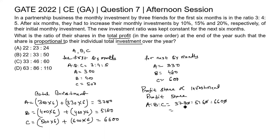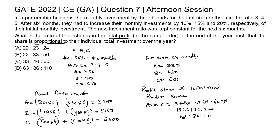Cancelling the common zeros, we get 378 : 516 : 660. Dividing by 3, we get 126 : 172 : 220. Further dividing by 2, we get 63 : 86 : 110. This cannot be reduced further, so the ratio of A, B, C's profit shares is 63 : 86 : 110. This corresponds to option D, which is the correct answer for this question.